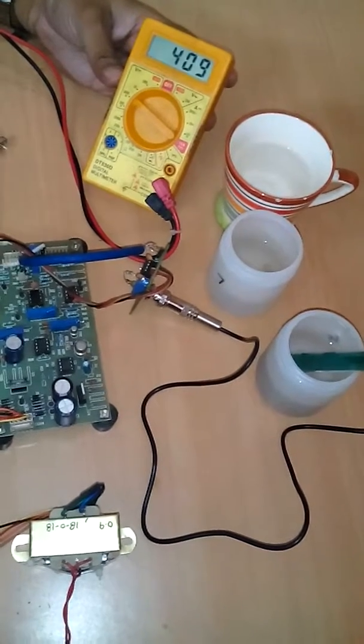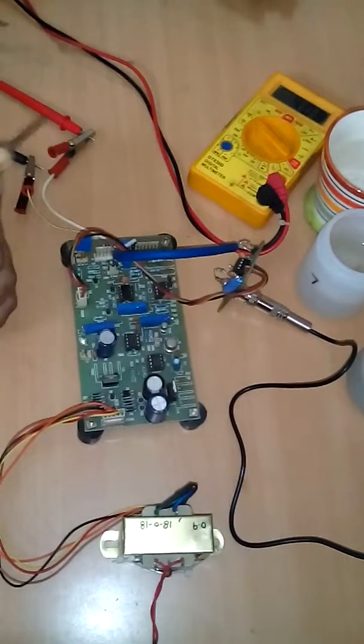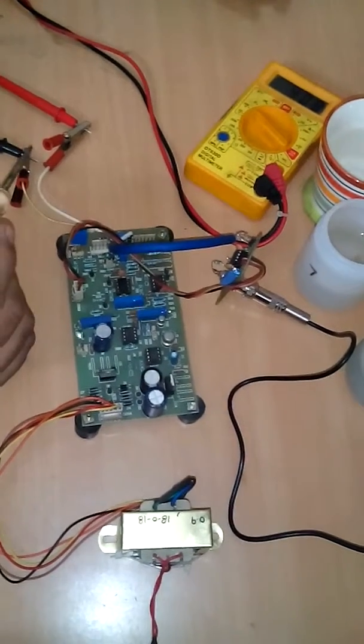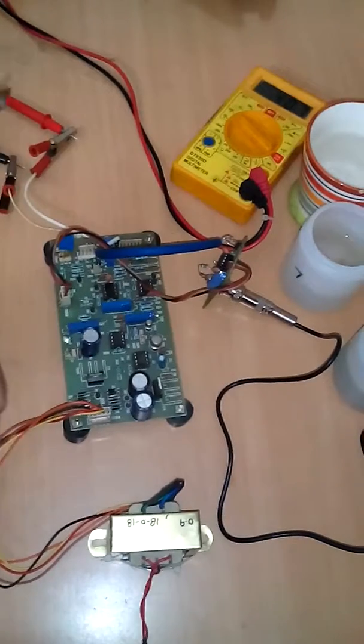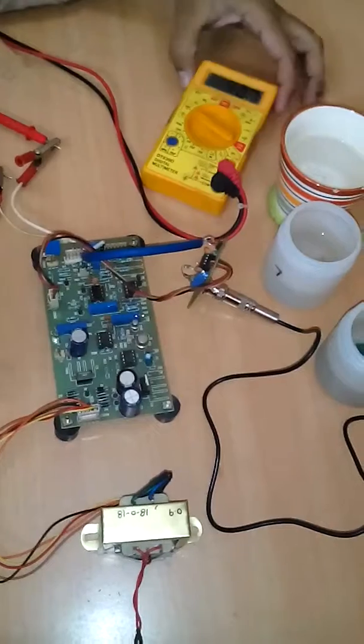The output of the circuit is in millivolts and you can connect this output directly to a microcontroller board. To display the readings on an LCD, just insert a decimal point at this place.